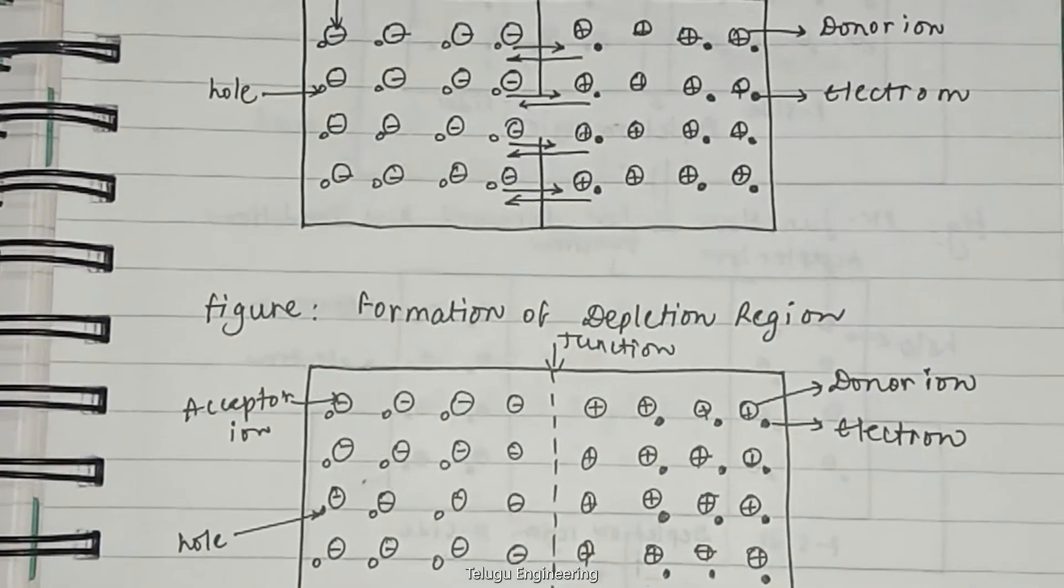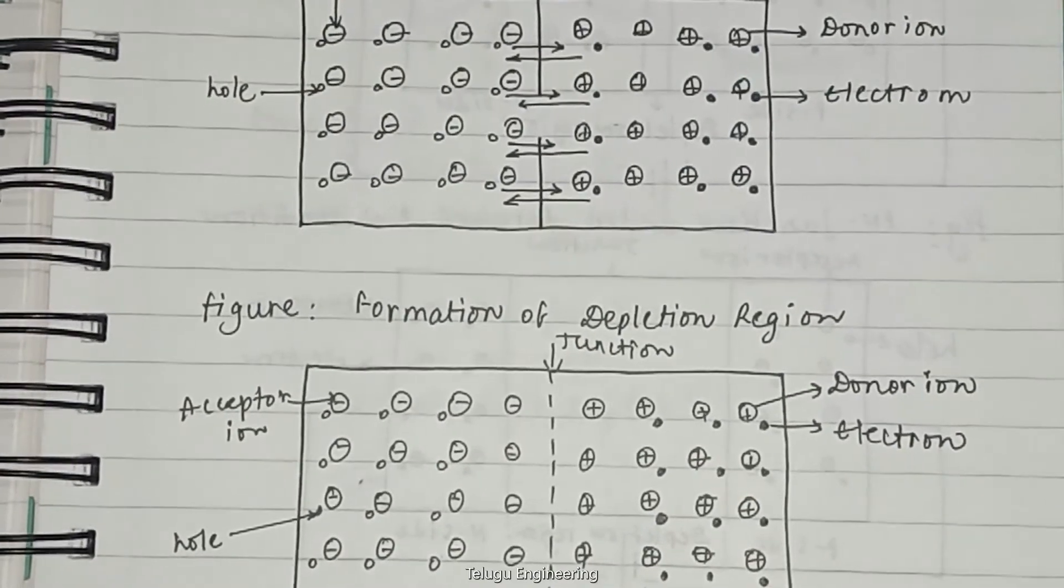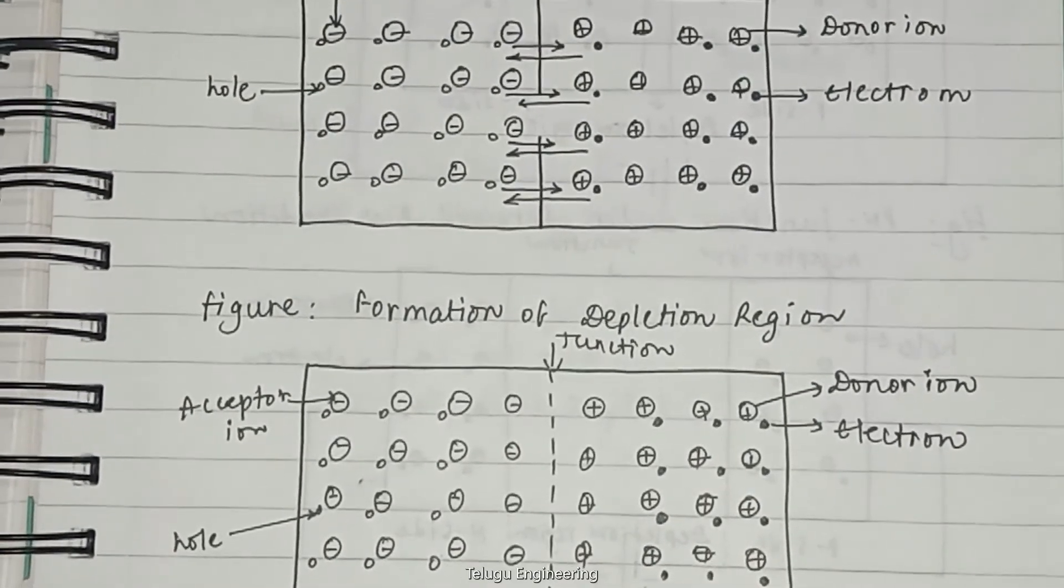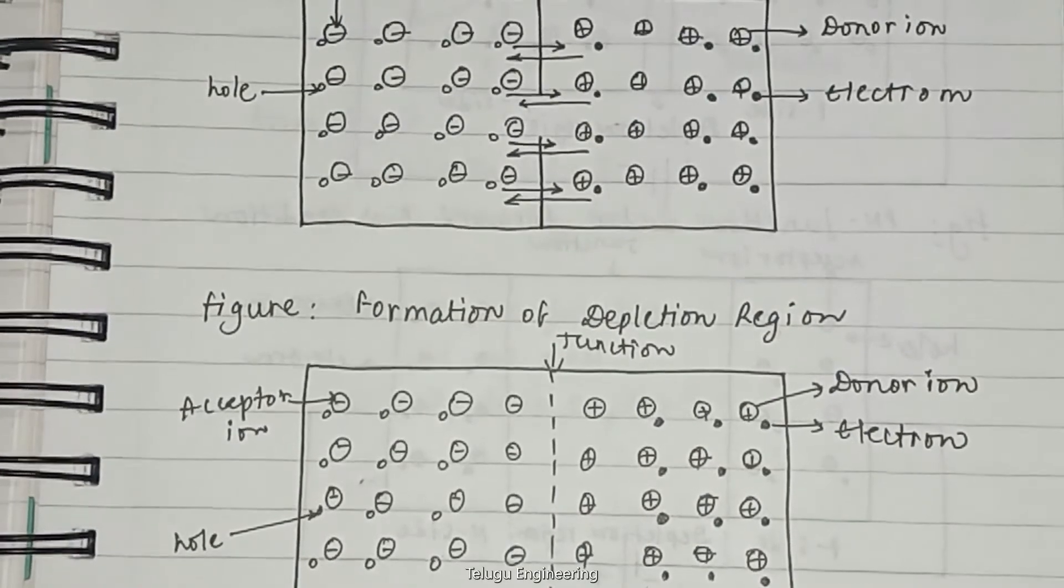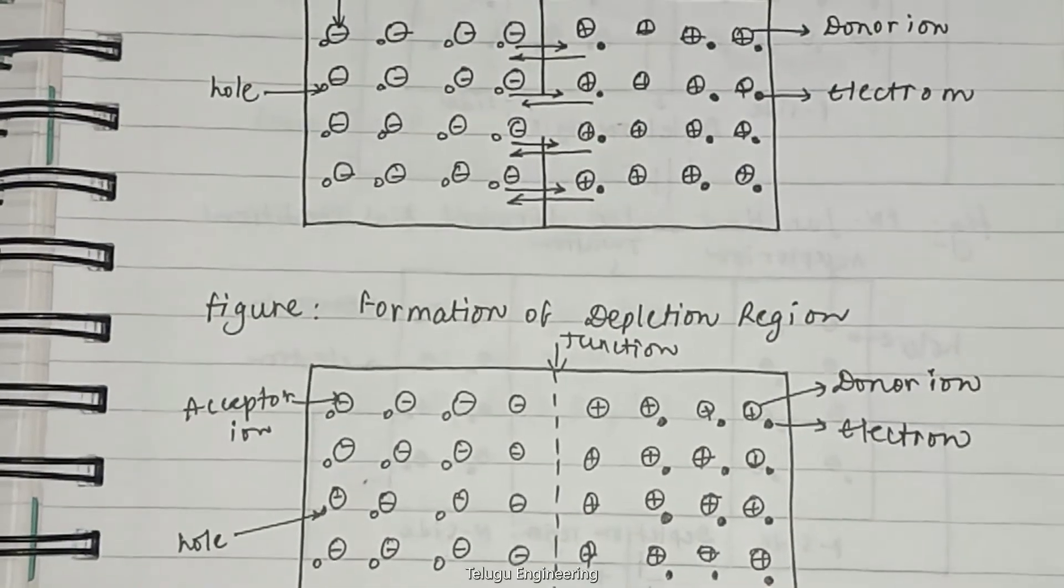The region where there are no mobile charges and only bound or fixed charges are present is called the depletion region. It is also known as the space charge region.